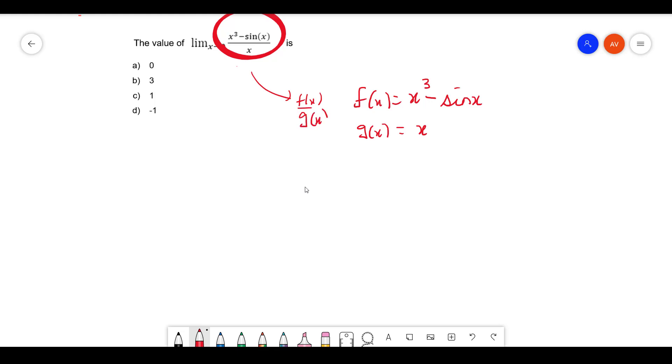Now x is tending to 0. At x equals 0, your f(0) is 0 minus 0, which equals 0. g(0) is again 0. That means it is satisfying the 0 by 0 form.